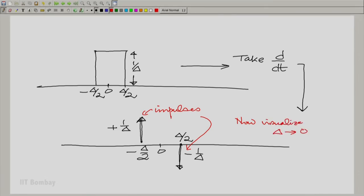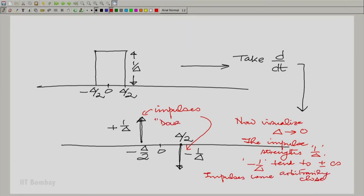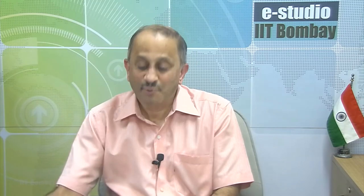Now, visualize capital delta going to 0. Two things happen. The impulse strength tends to infinity and the impulses come very close, arbitrarily close. It is called a doublet because there are two impulses and both of them are becoming infinitely strong and almost fusing. Two impulses becoming infinitely strong, becoming stronger and stronger and stronger and coming together and almost fusing. You know, in principle what does this doublet do? If you think about it,